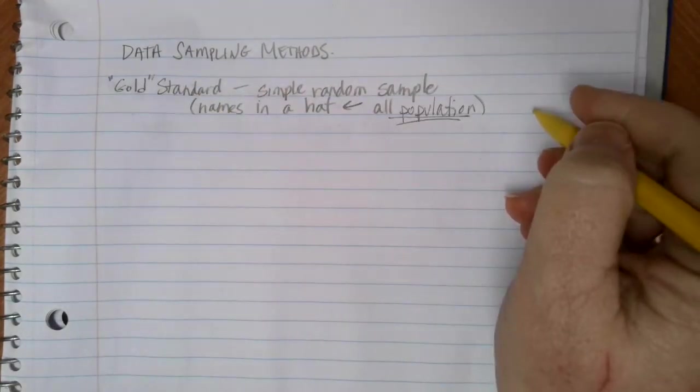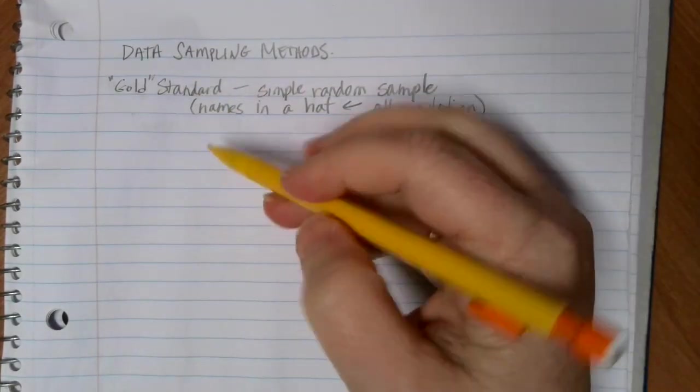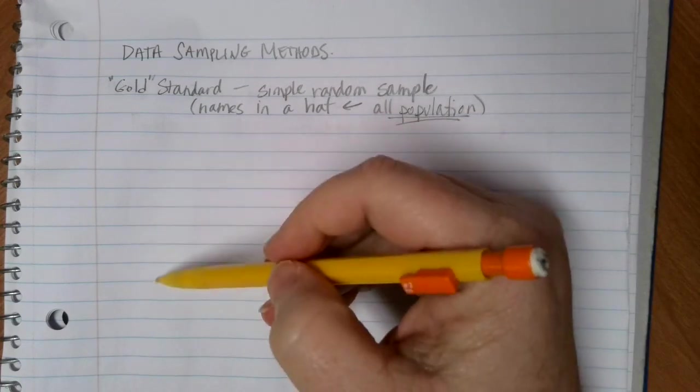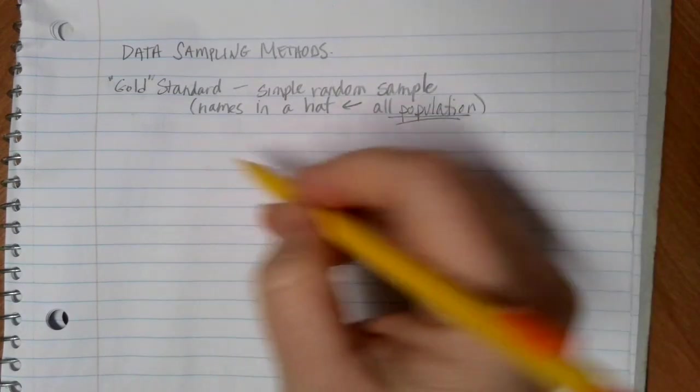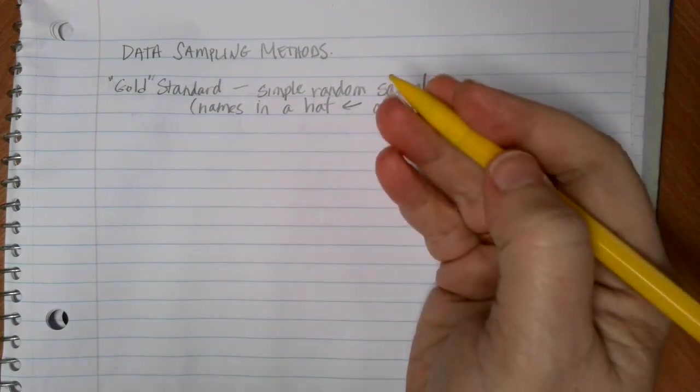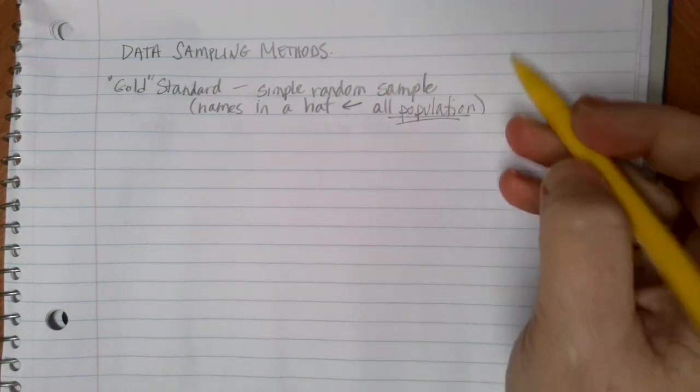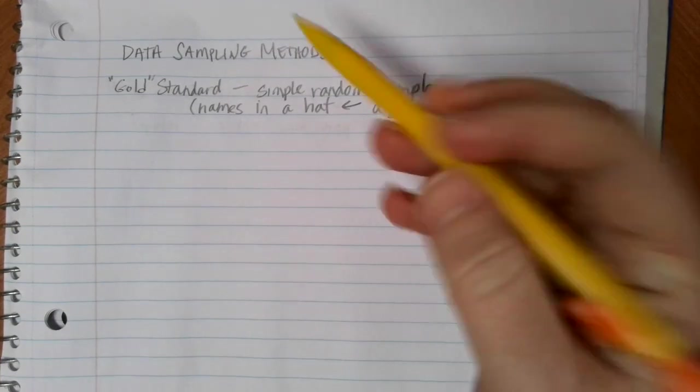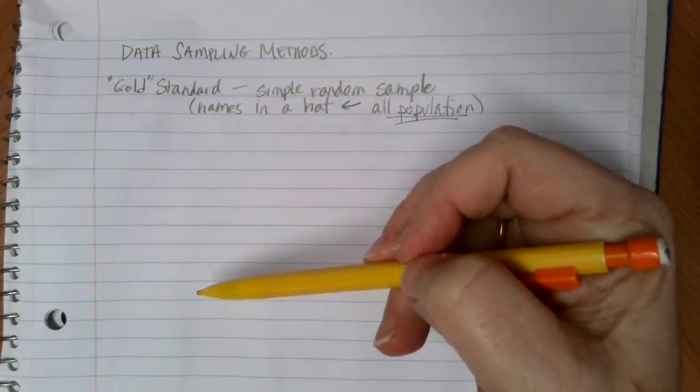For example, let's say you have a database of all of the students in your college and you want to randomly have a computer generate a list of 20 random people from that. That would be an example of a simple random sample because all of the students in the school are represented in the database.